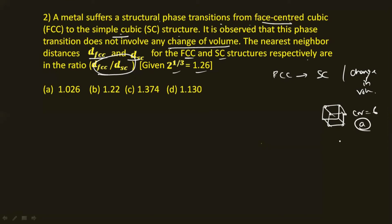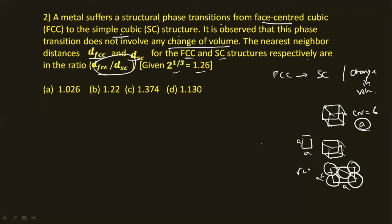For FCC, the atoms sit at face centers. Joining the face-center atom to a corner atom, the distance is the face diagonal divided by 2. The face diagonal of a square of side a is a√2, so by the Pythagorean theorem the nearest neighbor distance in FCC is a√2 / 2 = a/√2.